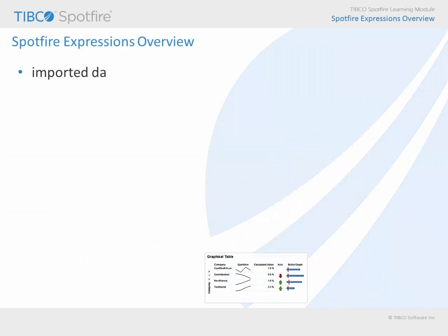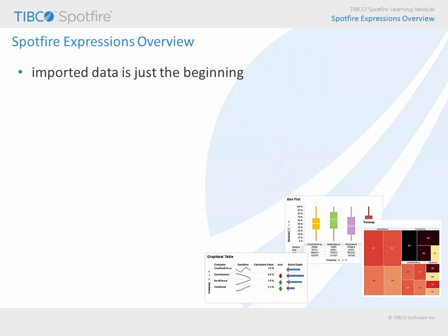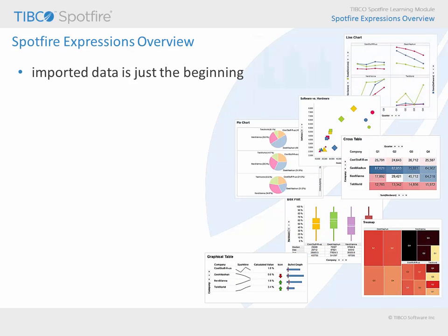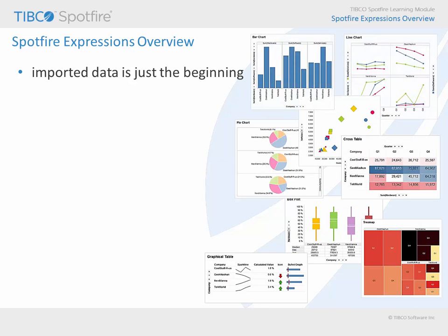The first thing you should know is that Spotfire handles the data you have imported in order to represent it visually. For example, the height of a bar in a bar chart may reflect multiple values from the underlying data table, and you may elect to represent that bar height as the sum of those values, the average of those values, or a wide variety of other aggregation options, any of which require some mathematical manipulation or data handling.